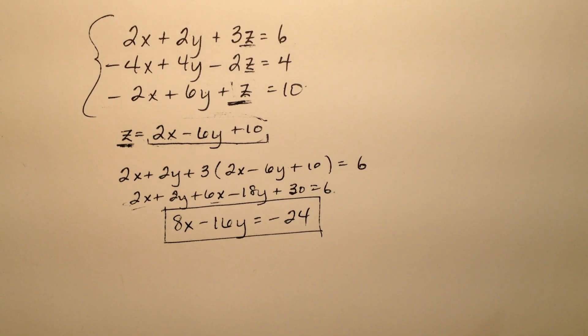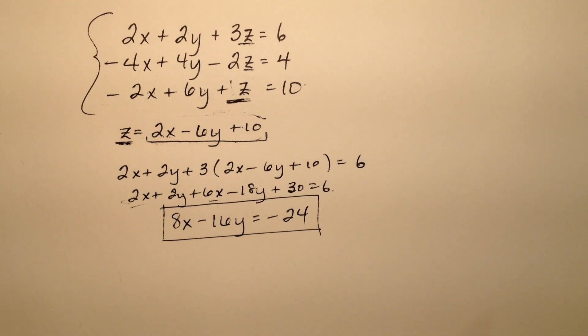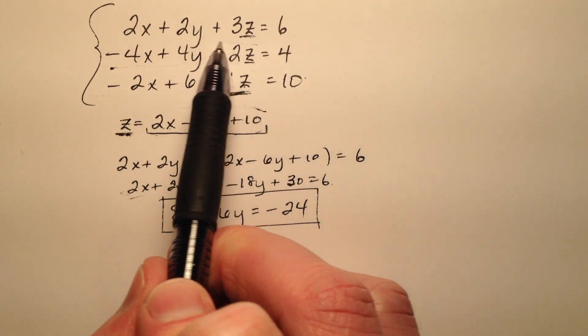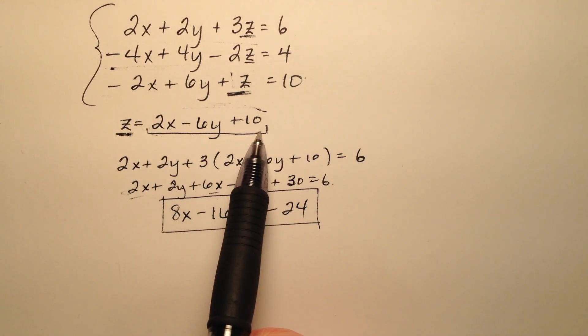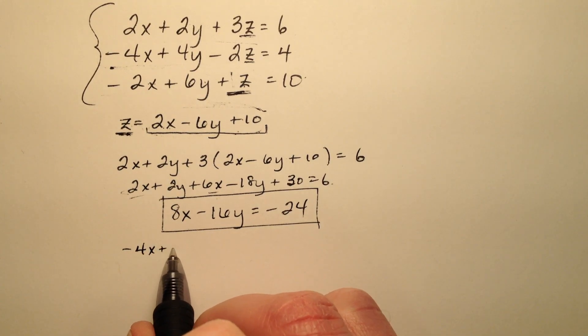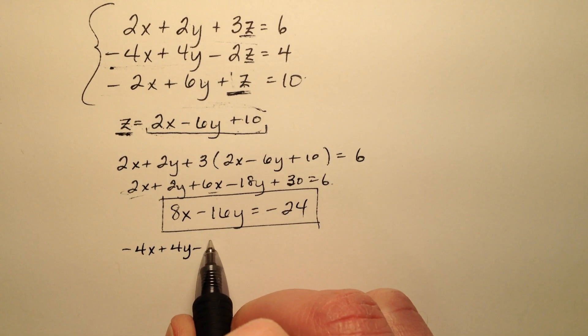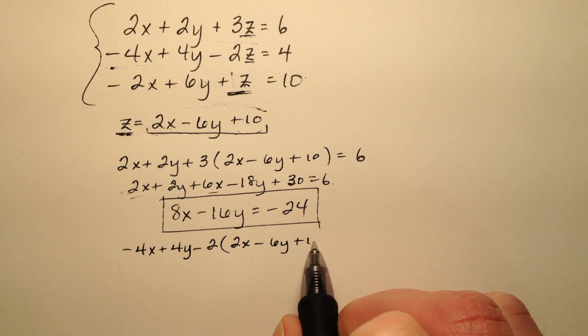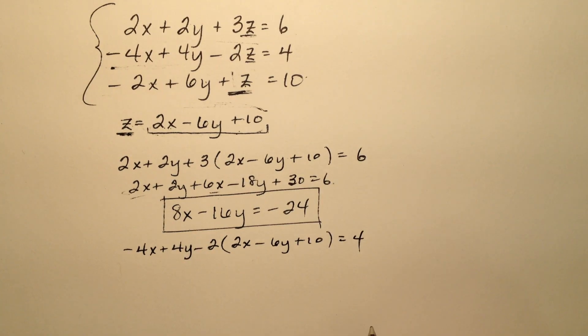I'm just going to put a little box around that so I can find it easily. So the second equation now, let's substitute this expression in for z. I have negative 4x plus 4y minus 2z, but z again is going to be this expression, and that's going to equal 4.